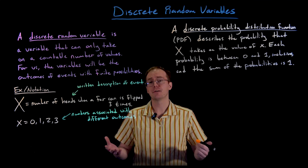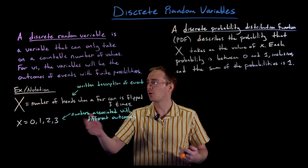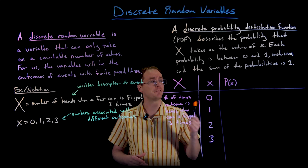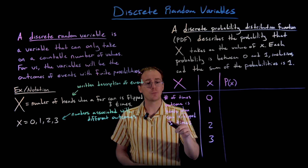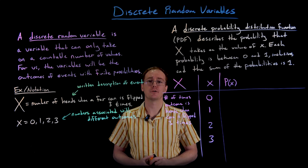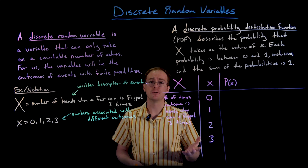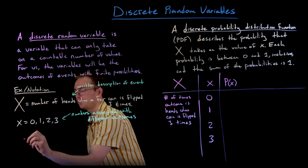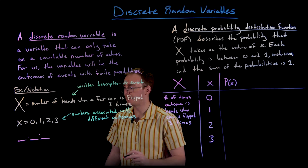Let's figure out what the probability distribution function looks like for our coin flip example. I'm setting up a table to organize our information. We are flipping three coins, so each coin flip is an independent event. With two possible outcomes per flip, there are eight total possible outcomes when flipping a coin three times.